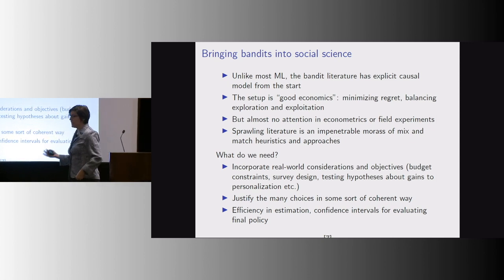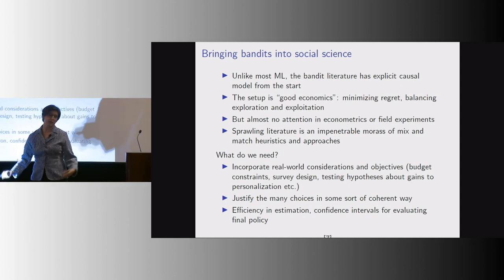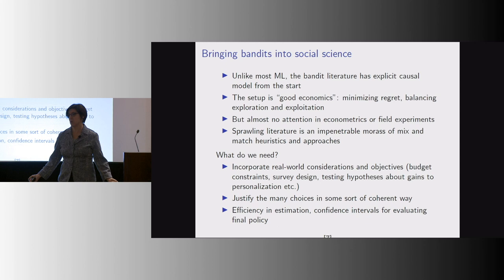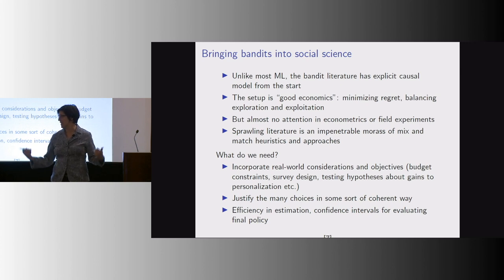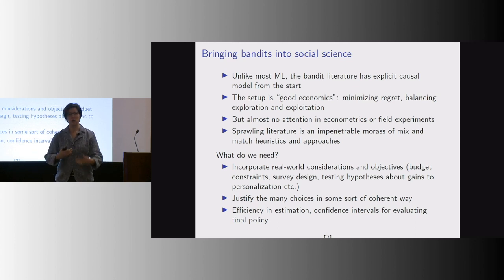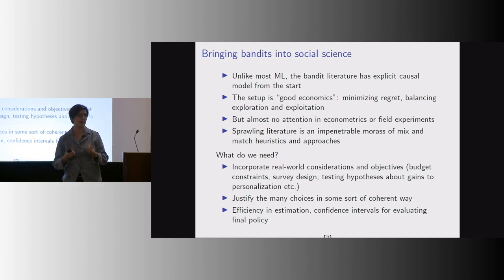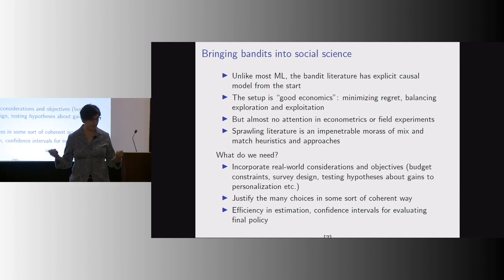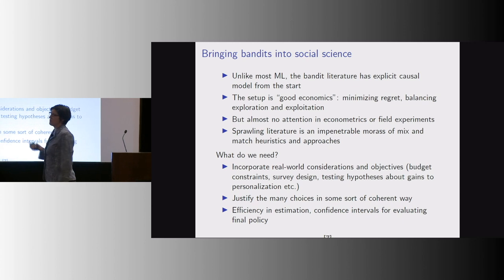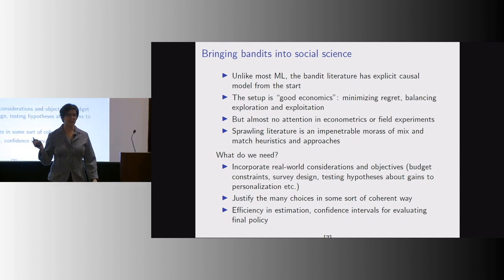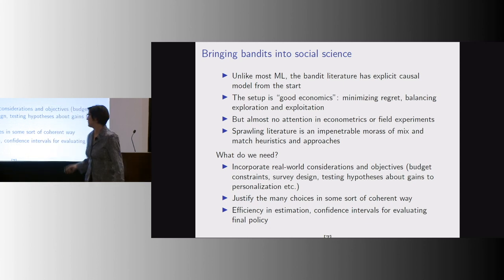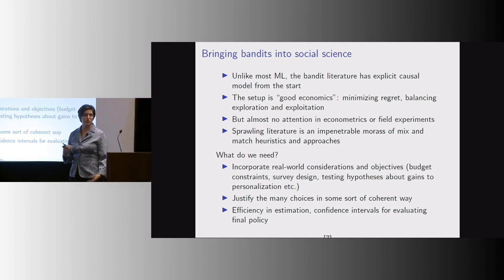Bringing this into social science — unlike most of our complaints about machine learning that it's all about prediction and not causal inference — this is actually one where we collectively missed the boat. This literature frames it as a causal problem correctly from the start. They are solving a causal inference problem using economic trade-offs — smarter than our experimenters thinking purely statistically. They think about there being a loss function for people in the experiment, balancing exploration and exploitation, which is the way a sensible economist would set this up.